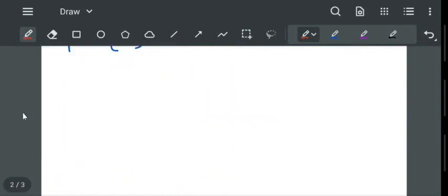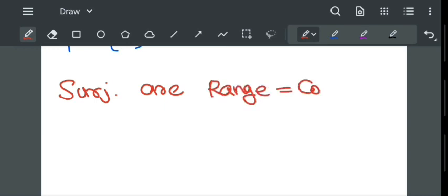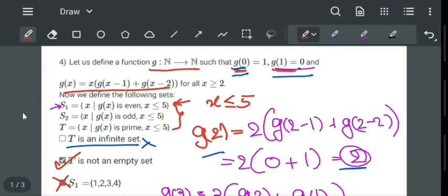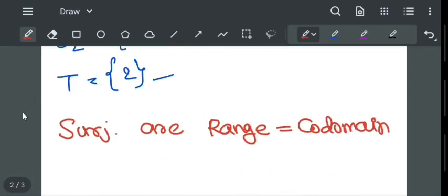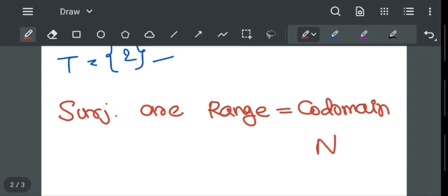The function g is not subjective. Now, what is the subjective function? Subjective function are function whose range equal to co-domain, where co-domain of g is natural number. So co-domain is natural number, what is range?